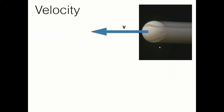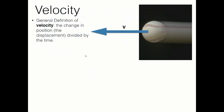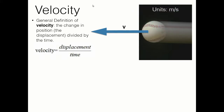Now, velocity. You can tell things are a little different — we usually use speed and velocity interchangeably, but in physics you cannot do that. These are two different terms. Velocity is generally defined as the change in position divided by time, not distance divided by time. Change in position, also known as displacement, divided by time. This gives us a very different quantity. The units are the same as speed — meters per second — but velocity is not a scalar. Velocity is a vector: it has direction and magnitude, and it can be negative.